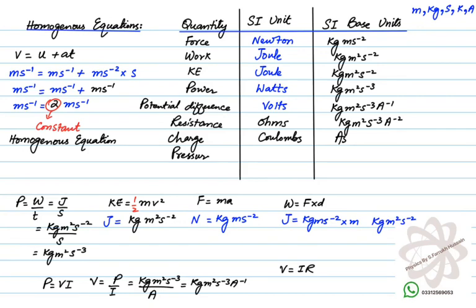Charge is measured in coulombs. Using the equation Q = It, derived from I = Q/t, where I is current in amperes and t is time in seconds, the SI base unit of charge is A·s.